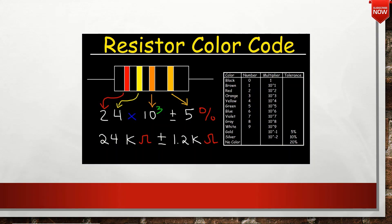In the table, there are 4 columns: Color, Number, Multiplier, and Tolerance.